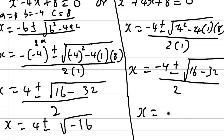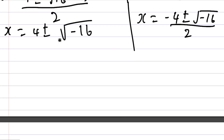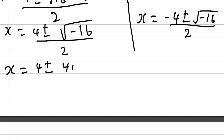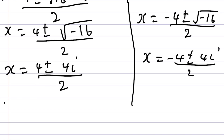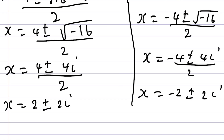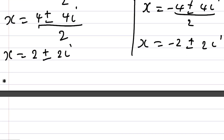The square root of minus 16 is 4i, since the square root of 16 is 4 and the square root of minus 1 is i. So for the first equation: X equals 4 plus or minus 4i, all over 2. For the second equation: X equals minus 4 plus or minus 4i, all over 2. Dividing everyone by 2: first gives X equals 2 plus or minus 2i, second gives X equals minus 2 plus or minus 2i.